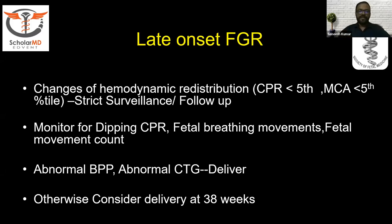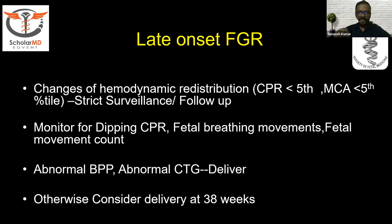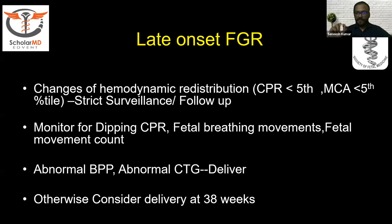Regarding delivery timing: severely growth-restricted babies — less than 3rd centile or umbilical artery PI more than 95th centile — should be delivered between 36 and 37+6 weeks. If AC or EFW is between the 3rd and 9th centile, or MCA or CPR is abnormal, consider delivery between 38 and not later than 38+6 weeks. If there is no contraindication to vaginal delivery, induction of labor is possible, with continuous electronic fetal monitoring; mechanical induction of labor is preferred over prostaglandins.